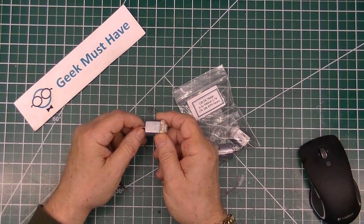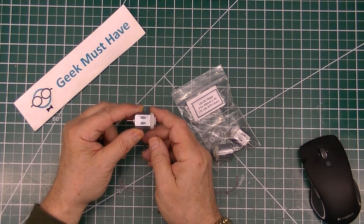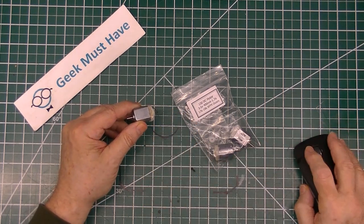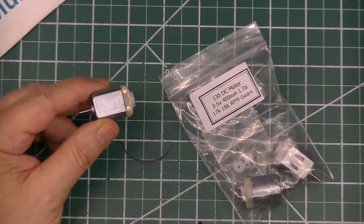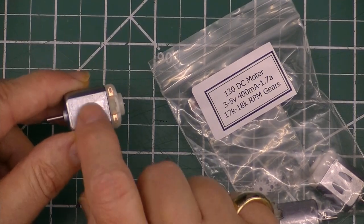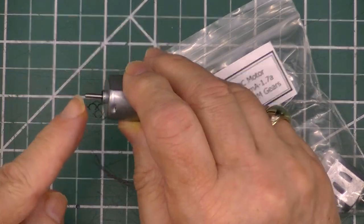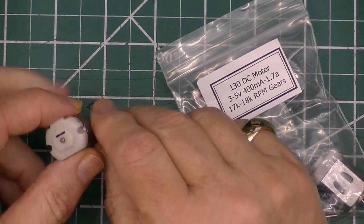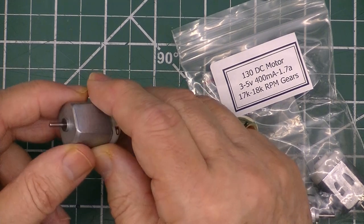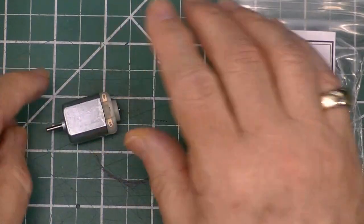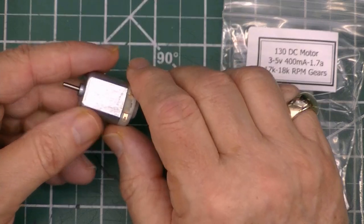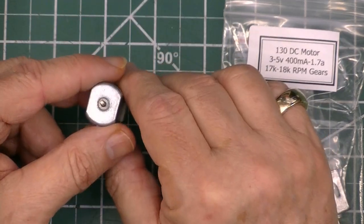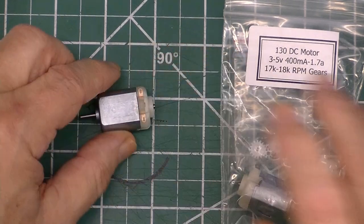This item is another set of 130 motors. They have flat sides on them with a 2 millimeter axle. They don't have any mounting holes on the front or the back, so these must be destined to snap into something. They run anywhere from 3 to 6 volts and can go anywhere from 17,000 to 18,000 RPM.